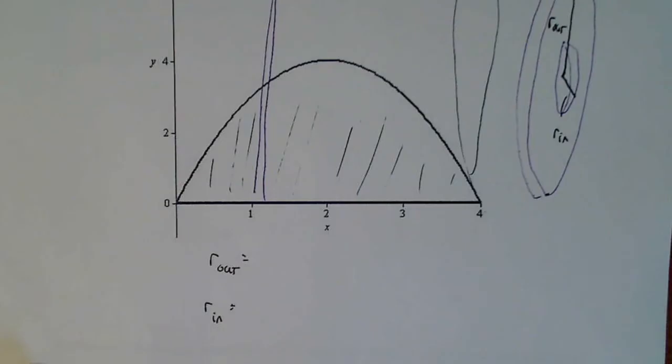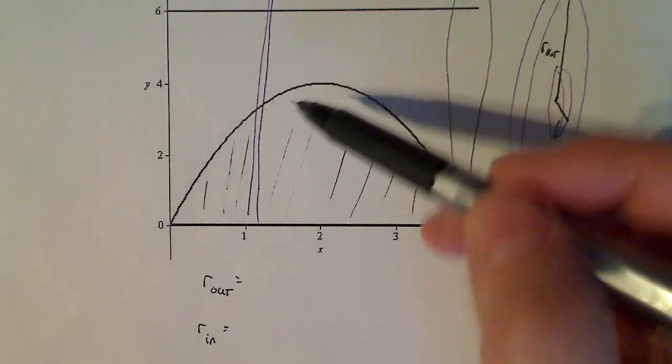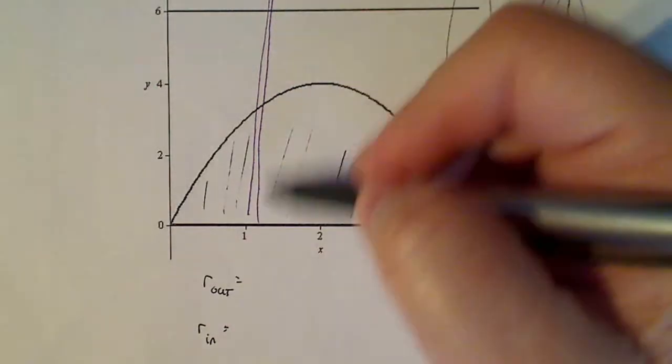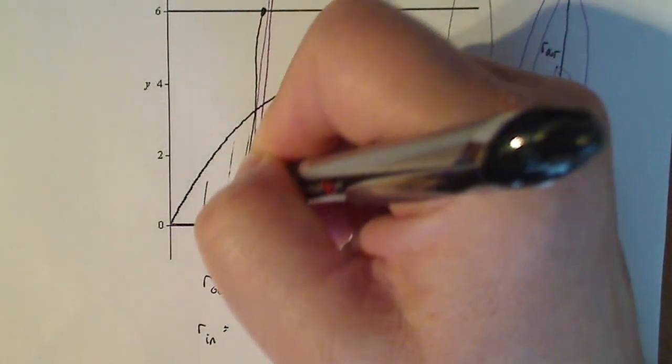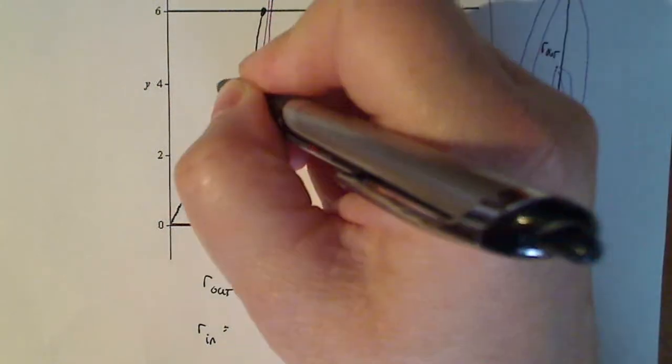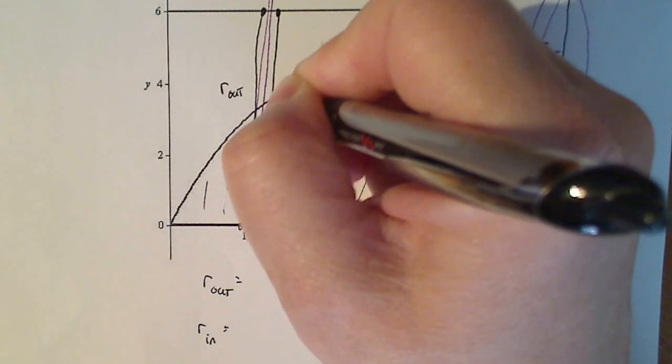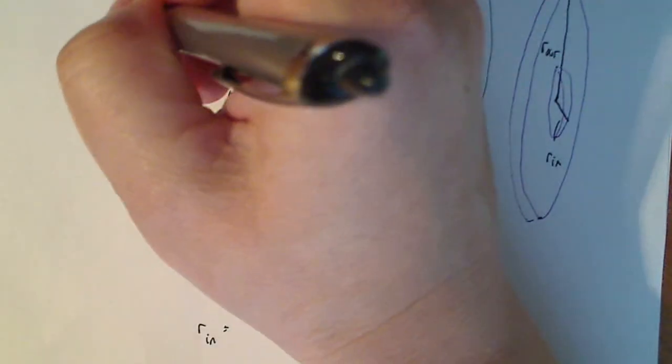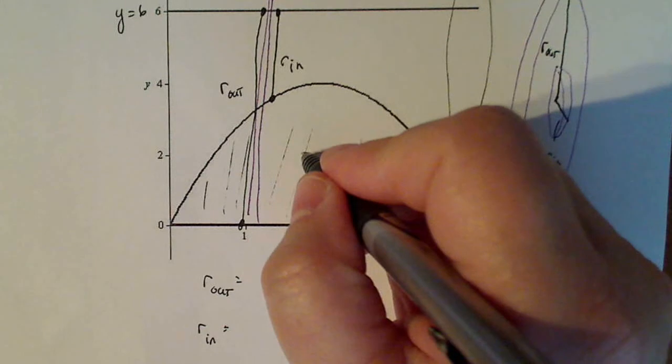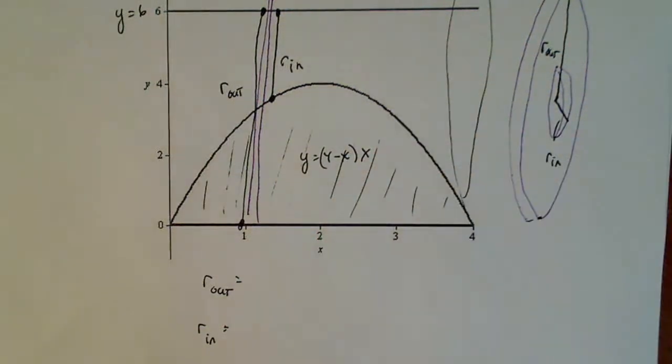So let me zoom in just slightly here. Now the radius here, it just shows up on this half. If I draw from here to here for my random slice, that's my radius of the outside. If I draw from here to here, that's the radius of the inside. And I just have to somehow describe that in terms of y = 6, which is this right here, and then y = (4-x)·x, which is that graph right there.